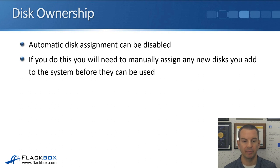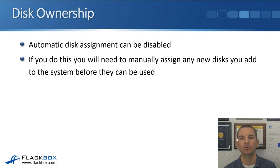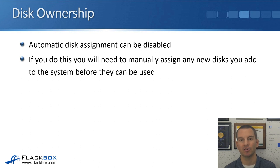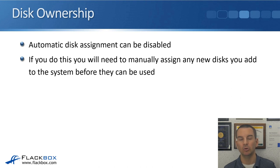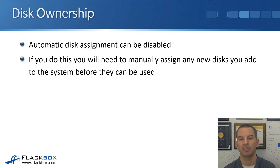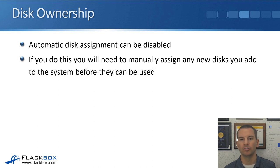The automatic disk assignment is enabled by default, but you can disable it if you want to. If you do, you'll have to manually assign any new disks you add to the system before they can be used. By default, auto-assign is on — you hot-swap a drive in and it's automatically assigned ownership by one of the nodes so you can use it immediately. If you turn off auto-assign, you have to manually specify the node which owns any new disks. A reason you would do that is if you wanted more granular control over which node owns your disks.